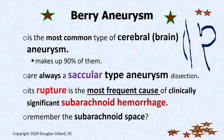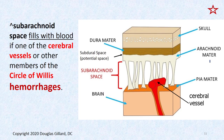A rupture or bleed of a berry aneurysm is the most frequent cause of a subarachnoid hemorrhage. It gets into the subarachnoid space. Here's the skull — the bone — right underneath is the dura mater. Right underneath the dura mater there's arachnoid mater, with a potential space between them.